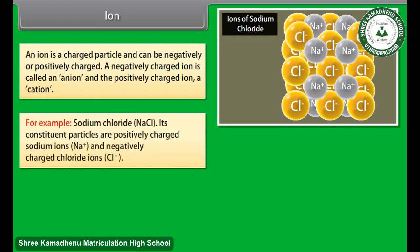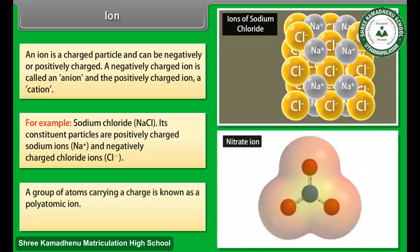For example, sodium chloride — its constituent particles are positively charged sodium ions and negatively charged chloride ions. A group of atoms carrying a charge is known as a polyatomic ion. Example: nitrate ion.